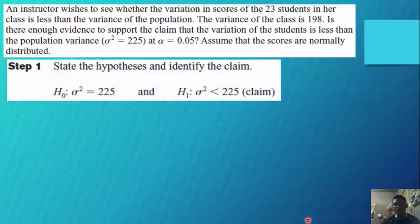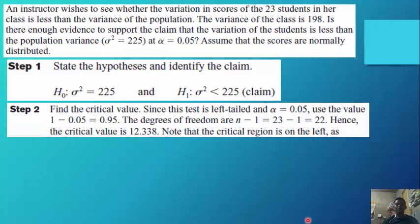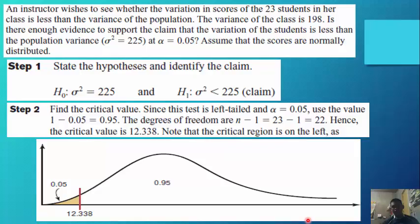Step 1: H₀: σ² = 225, H₁: σ² < 225. Step 2: Since the test is left-tailed and alpha is 0.05, use the value 1 minus 0.05. The degrees of freedom are n minus 1, or 23 minus 1 equals 22. From the table, the critical value is 12.338, and the critical region is on the left.